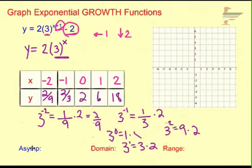A negative 2, positive 2 ninths, that is going to be kind of close to 0, a little bit above it like that. Negative 1 and 2 thirds is 2 thirds of the way up right there. 0 and 2, 1 and then up here to 6, and then 2 and the positive 18 is just off the graph. So here are our points.